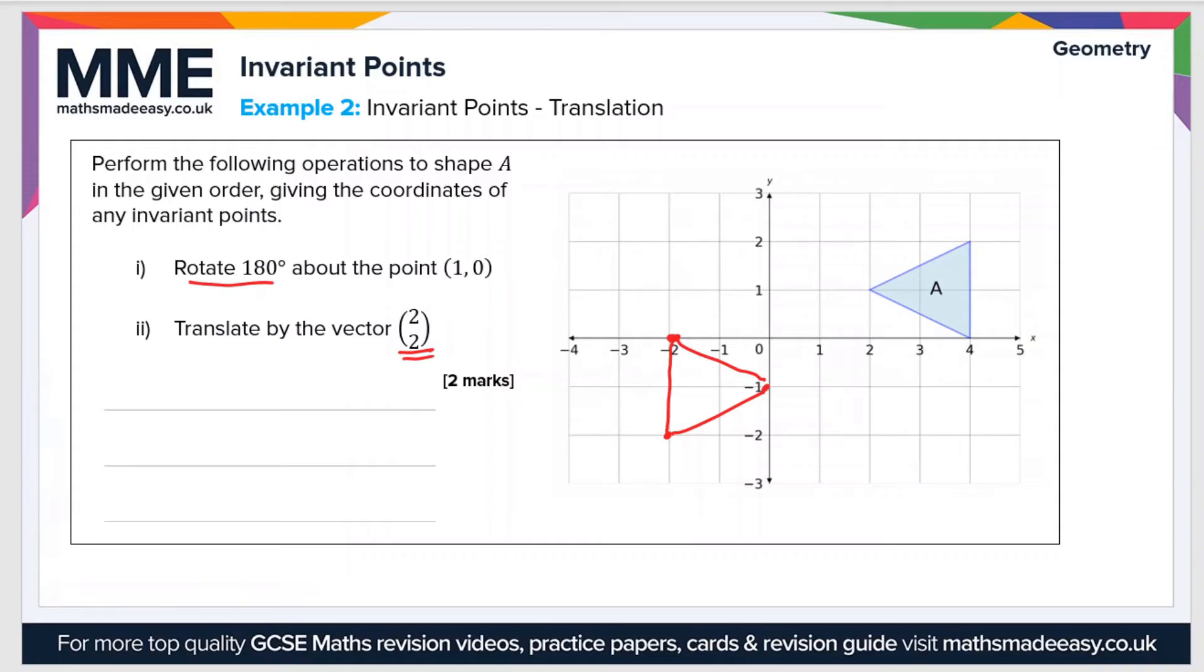So that's 2 in the positive x direction, which is to the right, and 2 in the positive y direction, which is upwards. So if we go 2 to the right and 2 upwards, we'll do that point by point.